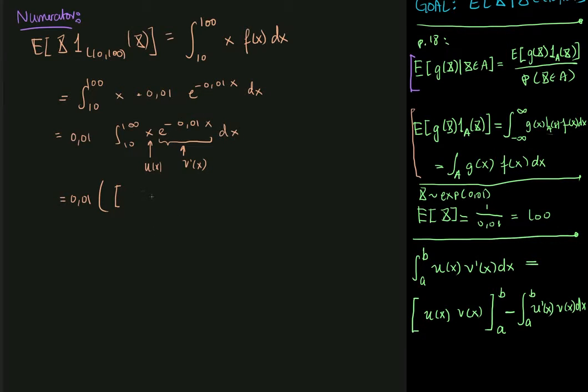So which thing differentiated gives me e to the minus 0.01x. Now the thing differentiated that gives me this is 1 over minus 0.01 multiplied by e to the minus 0.01x. Because if I take that and differentiate, then the exponent of minus 0.01 goes down into the fraction, and then these two will cancel out. So this is what I want here.